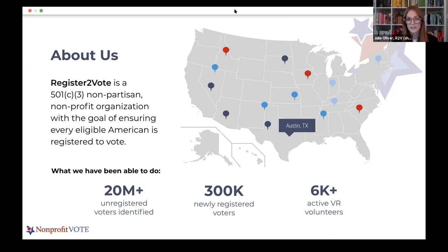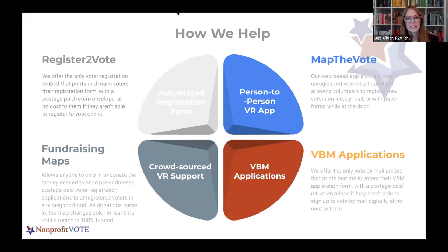Register to Vote has also created fundraising maps so you can look at a map of a precinct and see, for example, that there are 52 potential unregistered voters there. You can fund that precinct and basically purchase all the registrations and the mailings to send to them. The tool works on your phone or laptop, and they were also doing vote-by-mail applications in Texas in response to coronavirus.